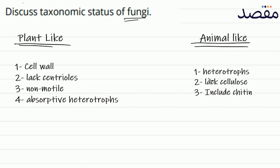The third animal-like character is chitin. Chitin is a chemical component found in the exoskeleton of arthropods. Fungi also contain chitin, and for this reason they resemble animals.